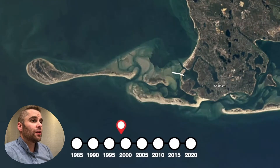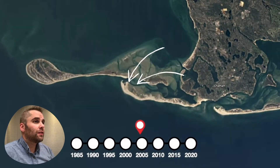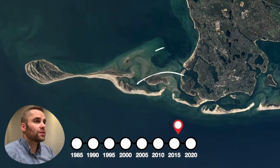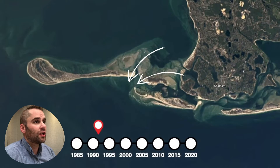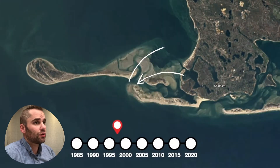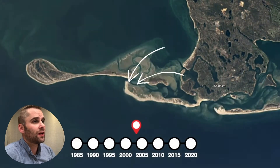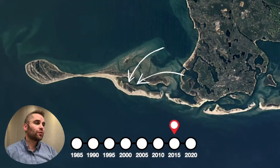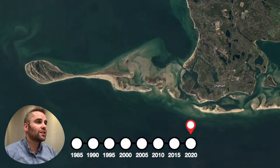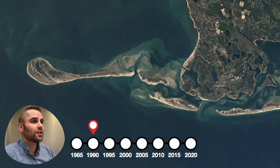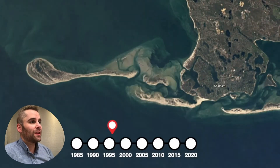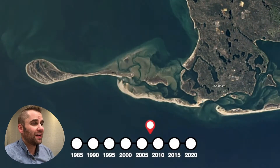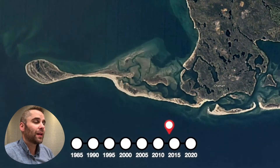On the left side of the video, we have this spit that keeps getting sand deposited on it and the beach grows — so here we have net deposition. It's really interesting to see these two processes happening at different rates in kind of the same spot.